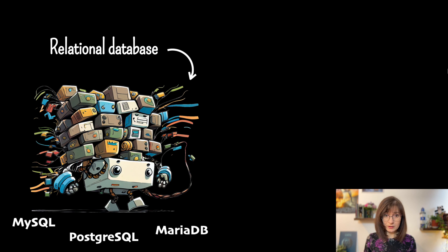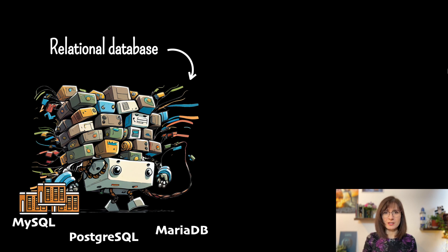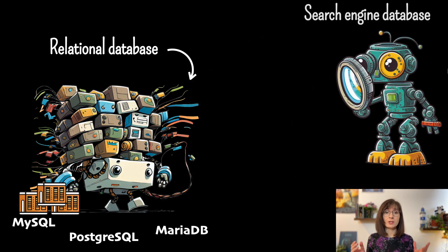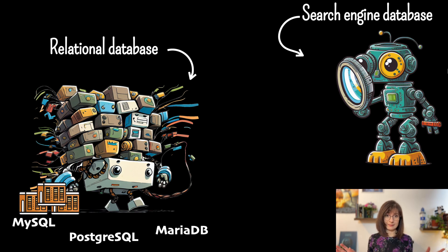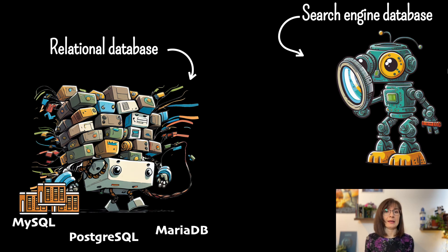And as you might know already, relational databases such as Postgres store data in tables. Now the second guest joining us today is a specialized non-relational database — a search engine database that is optimized for search across really large volumes of data. It's quite flexible about data structures and totally able to work with semi-structured or unstructured data. That's why it normally doesn't store data in tables.